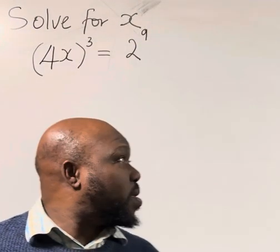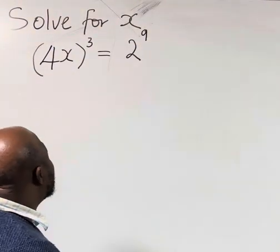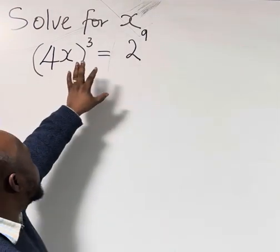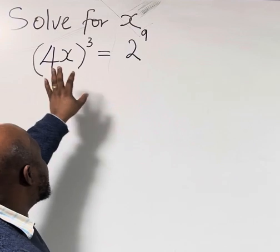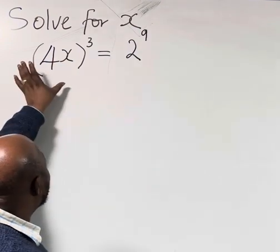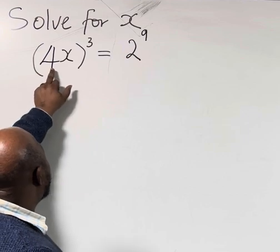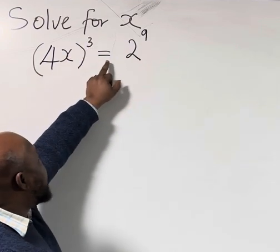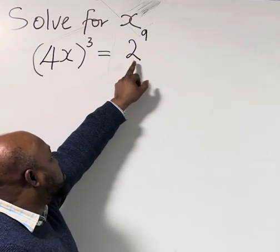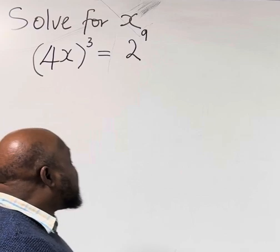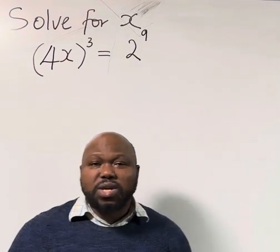Welcome back to my math lesson. We are continuing with indices. This is the next one we're going to do now. Solve for x: (4x)³ = 2⁹. So we are asked to solve for x.